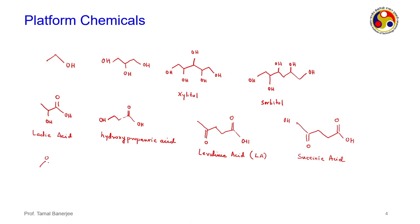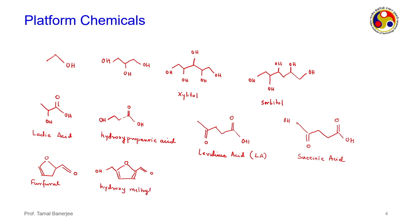Furfural is also a platform chemical, useful in petroleum industries downstream for extraction as an aromatic extractant. Then there is HMF — hydroxymethyl furfural — which has a 5-membered ring at the core, a carbonyl group (double bond O), and an OH group. HMF is not stable in acidic media, which is a key challenge we will discuss.